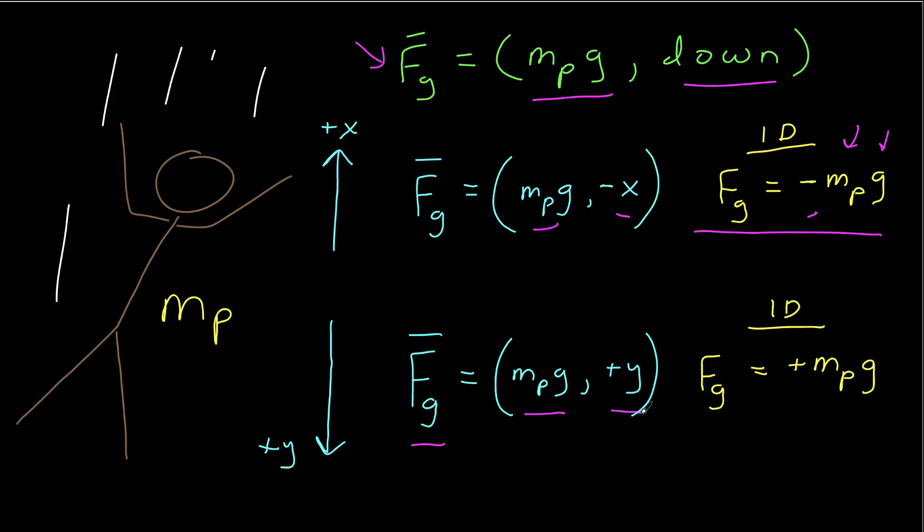So in one dimension, my force due to gravity would be a positive mass of the object times g. The sign here again indicates the direction, which for this coordinate system is positive.